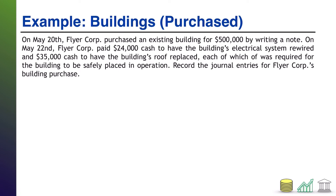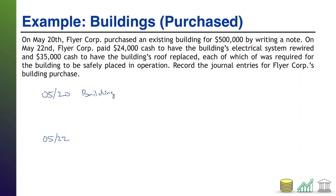Here's an example of a purchased building. On May 20th, Flyer Core purchased an existing building for $500,000 by writing a note. On May 22nd, they paid cash to have the electrical system rewired and the roof replaced, each required for the building to be safely placed in operation. For May 20th: we credit Notes Payable $500,000 — the cash we're promising to pay — and debit Building $500,000, since that is the purchase price.